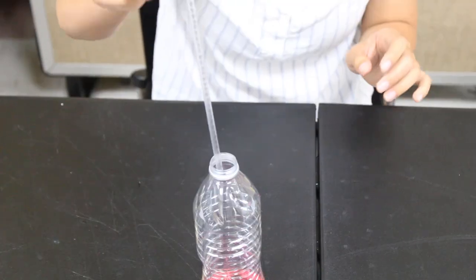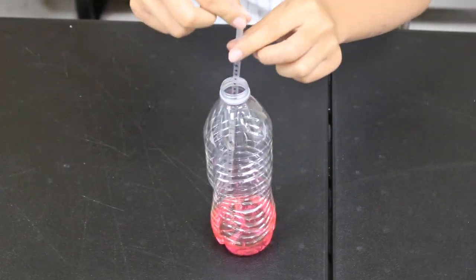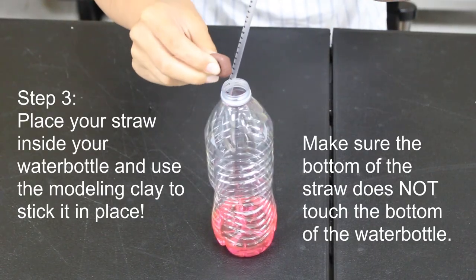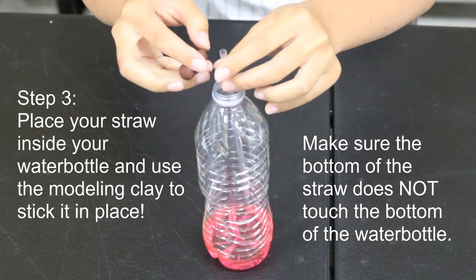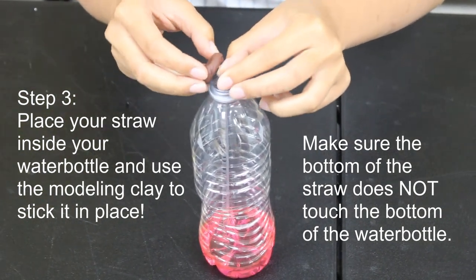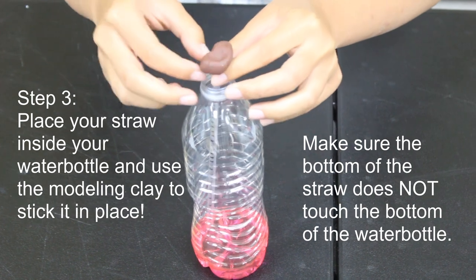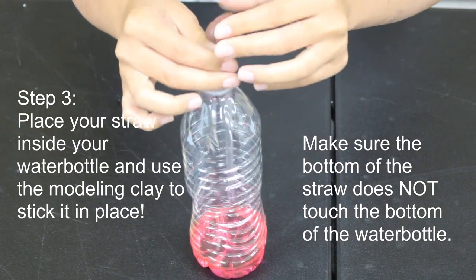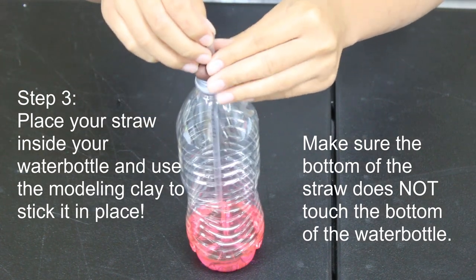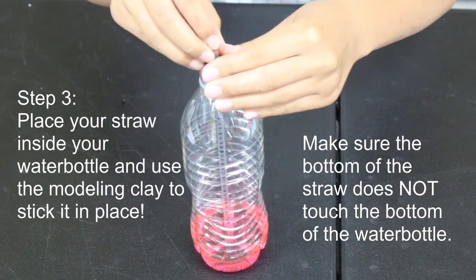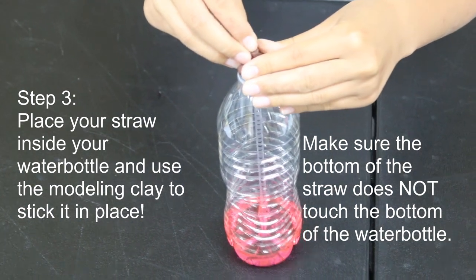For this next step, step three, you're going to place that straw inside the water bottle and you're going to use the modeling clay to stick it in place. However, when you put the straw in, make sure the bottom of the straw does not touch the bottom of the water bottle. You just want it to touch the liquid but not the bottom of the water bottle. So find a good length for it to go in and then stick that on there with the modeling clay.